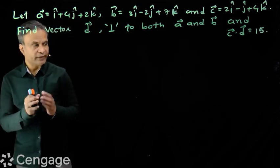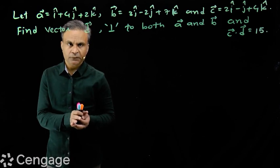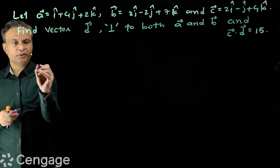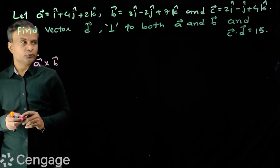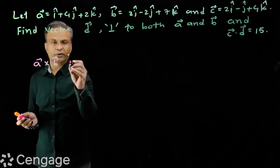First, we find vector perpendicular to the plane of vectors a and b. What will that vector be? Vector will be a cross b. This is vector perpendicular to vectors a and b, or perpendicular to the plane of vectors a and b.